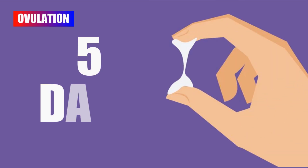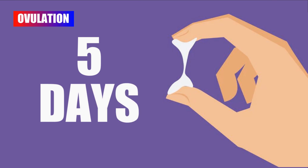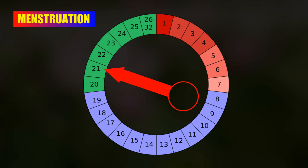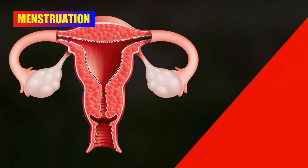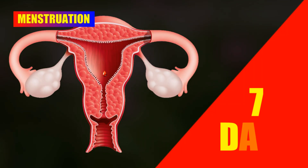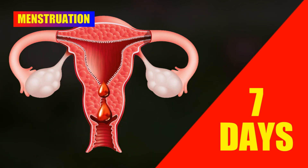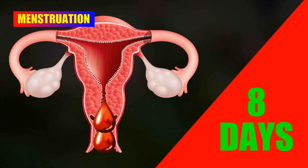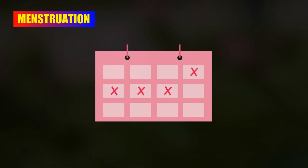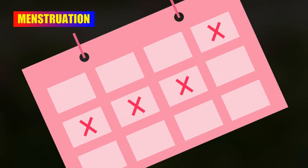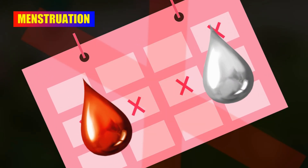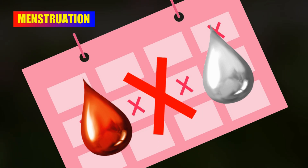Ovulation lasts at least five days but sometimes it can stay for seven days. Menstruation starts on the first day of the women's cycle and stays normally seven days, but sometimes it can stay for five, six, or eight days. If women feel an irregular period, their ovulation and menstruation dates can be unusual and irregular every month.